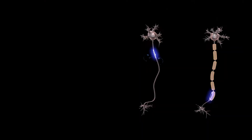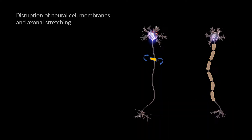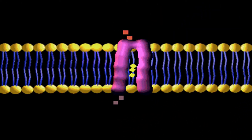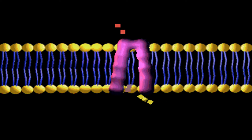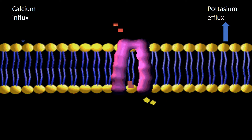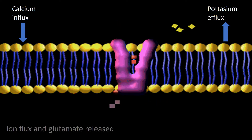These events begin with disruption of neural cell membranes and axonal stretching, leading to an efflux of intercellular potassium ions and an influx of calcium ions causing neuronal depolarization. Additionally, N-methyl-D-aspartate receptor binding by glutamate opens potassium-calcium ion channels, allowing unrestricted flow of these ions outward and inward, respectively.